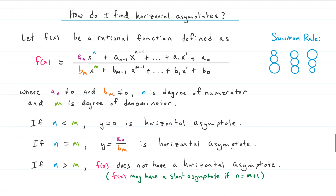How do we find horizontal asymptotes? I'm going to first talk about the mathematical rule, and then I'll give you a snowman rule which is something I made up. For this rational function F with a polynomial on top and a polynomial on the bottom: the leading coefficient of the top polynomial — the number in front of the variable with the highest power — I'll call A sub n. The leading coefficient of the bottom polynomial, I'll call B sub m.